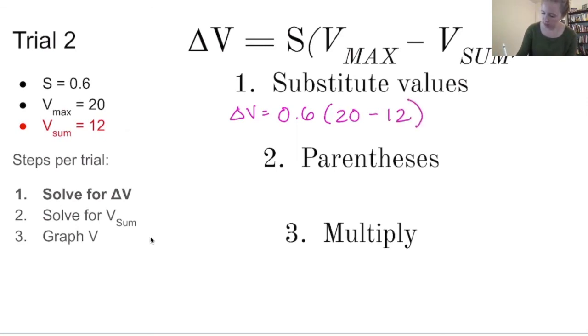Next, we're going to do what's written in parentheses. So 20 minus 12 is 8. And then 0.6 times 8 is 4.8. So now we know our delta V for our second trial.